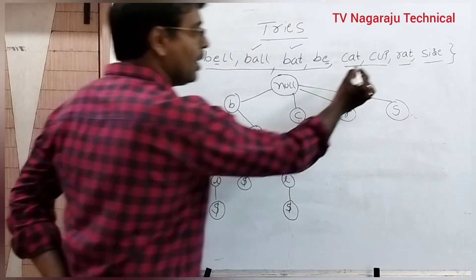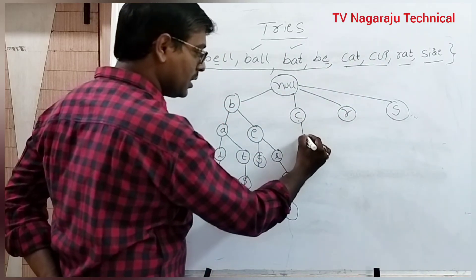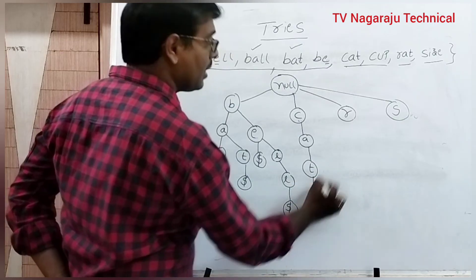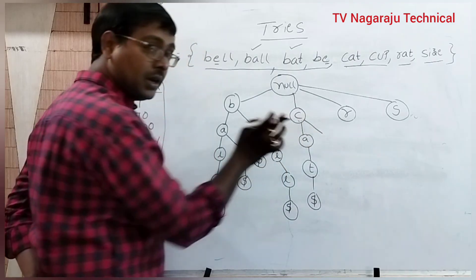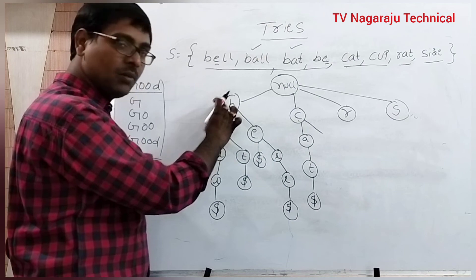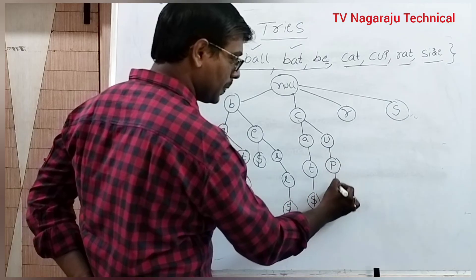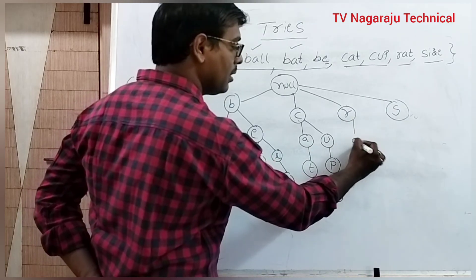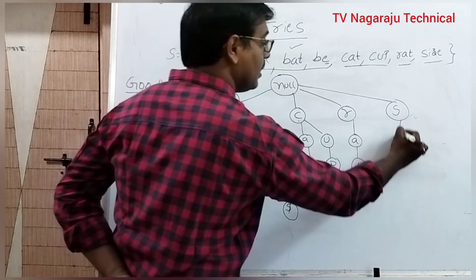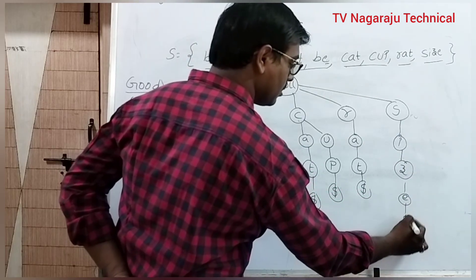Now coming to C: C-C match, then A vs U — A is smaller. So C-A-T with dollar. C is already completed — if a prefix is already available, no need to write the prefix again. Then C-U-P with dollar, R-A-T with dollar, and S-I-Z-E.